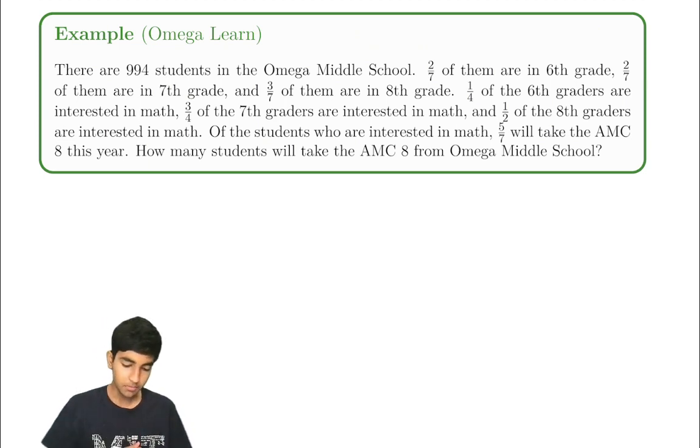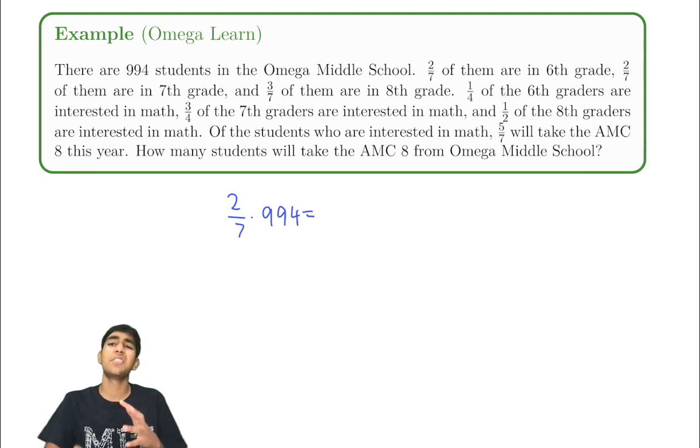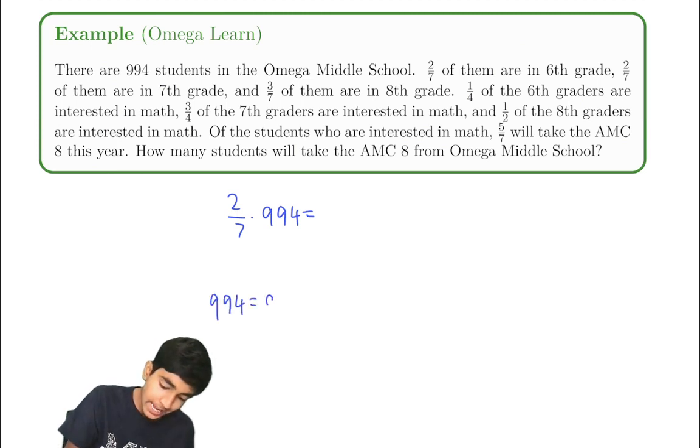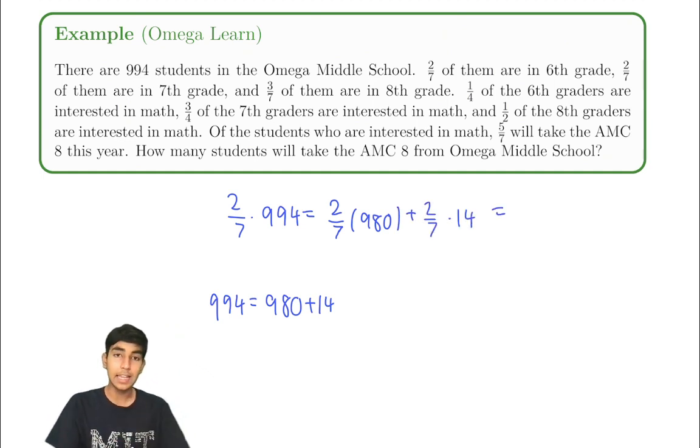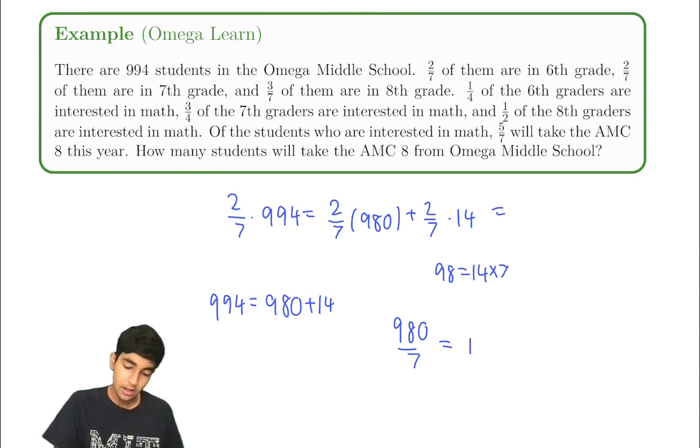So 994 students, two sevenths are in sixth grade. Two sevenths times 994. We can divide this out and do some computation like that. But 994, a cool trick I covered in my divisibility videos. 994, notice how it's 980 plus 14. So this is also the same thing as two sevenths of 980 plus two sevenths of 14. And two sevenths of 980, we know 980 divided by 7 is just, we know 98 is 14 times 7. So 980 divided by 7 is 140. So two sevenths of 980 is just 2 times that, 280. Plus two sevenths of 14. That's just 4. So 284 sixth graders.